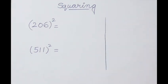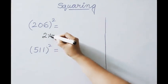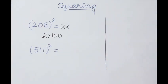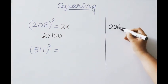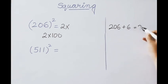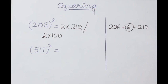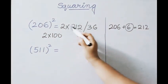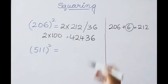Next example: 206 squared. Base here is 200, which is 2 times 100, so multiply the first part by 2. Above 200, the excess value is 6. Add 6 to 206: we get 212 as the first part answer. 6 squared is 36 — write down 36. Now multiply 212 by 2: 2 twos are 4, 2 ones are 2, 2 twos are 4. Write the second part answer as 36. So 206 squared is 42436.